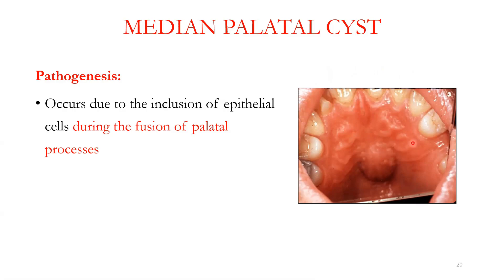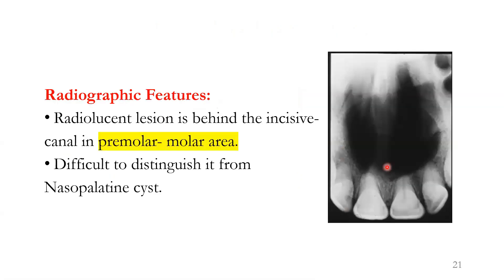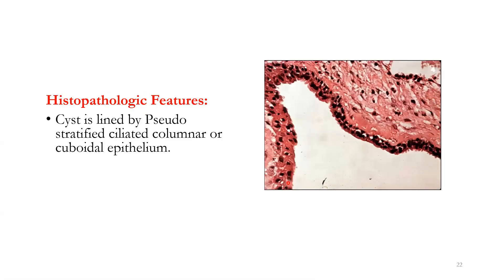During this fusion, if there is any inclusion of epithelial cells, it results in the formation of the median palatine cyst. Clinically, it is present in the midline of the palate, as you can see here, and the radiolucency in the premolar-molar area is the feature. It is quite difficult to distinguish from the nasopalatine cyst, which we'll discuss later. All non-odontogenic cysts have pretty much the same histopathological features.